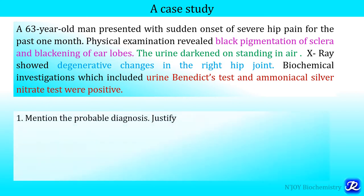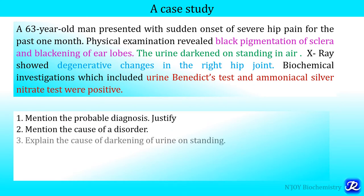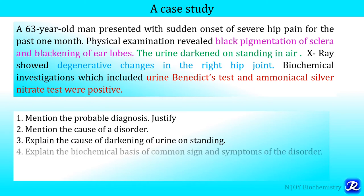The various questions that can be asked are: mention the probable diagnosis and give justification for the same; mention the cause of the disorder; explain the cause of darkening of urine on standing; and explain the biochemical basis of common signs and symptoms of the disorder, for example, black pigmentation of sclera, blackening of ear lobes, and degenerative changes in the hip joint.